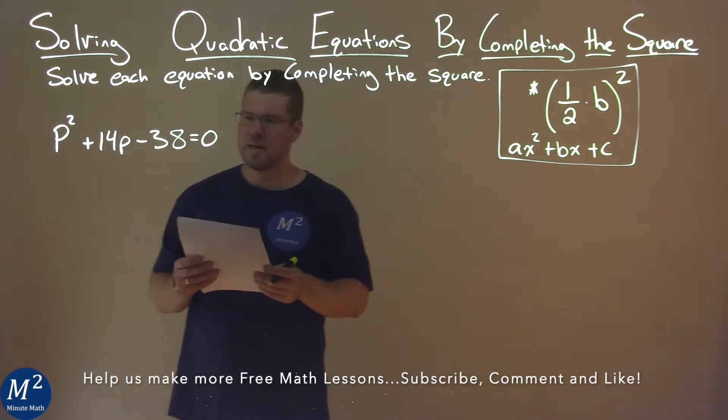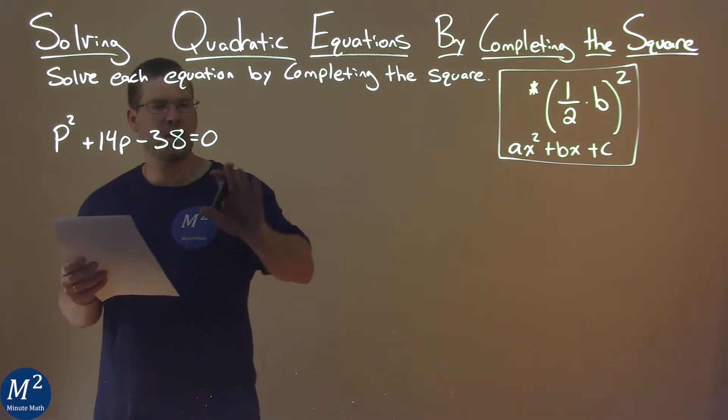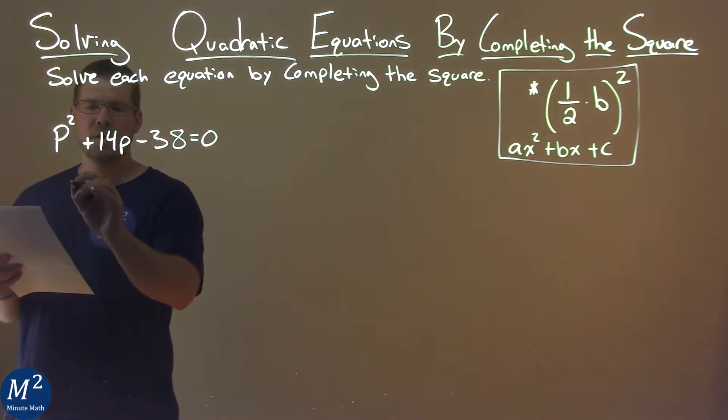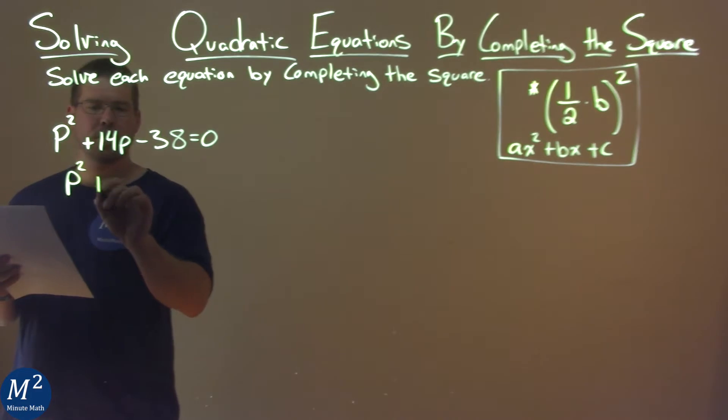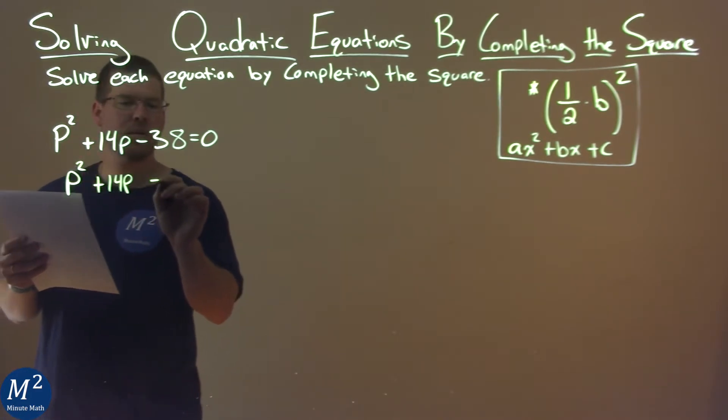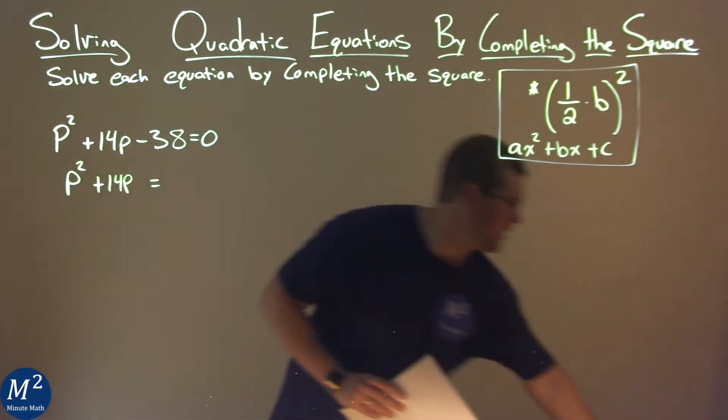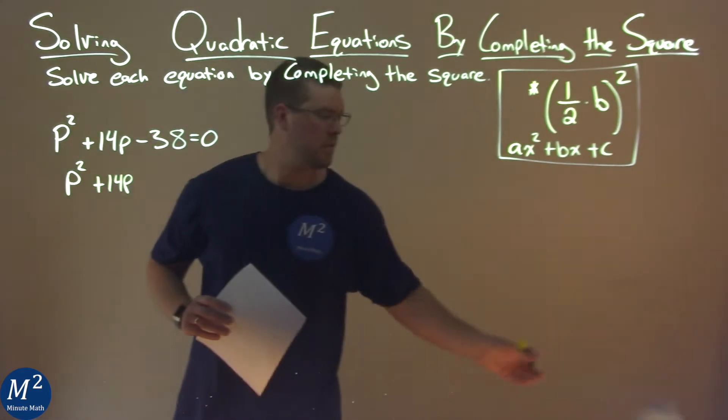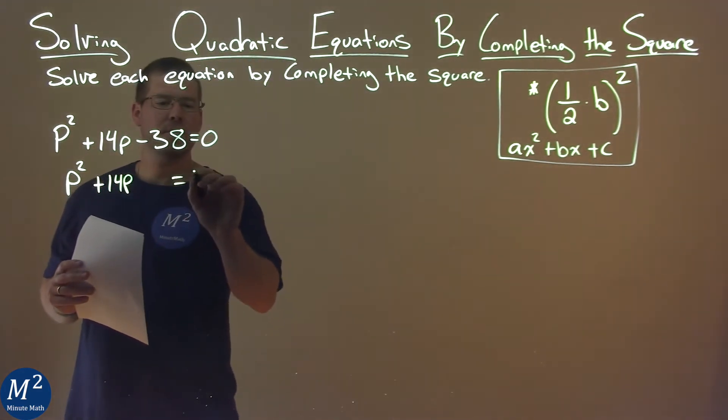So the tricky thing here is we want to bring this c value over to the right-hand side. So we have p squared plus 14p is now equal to, let's get some space here, equal to a positive 38.